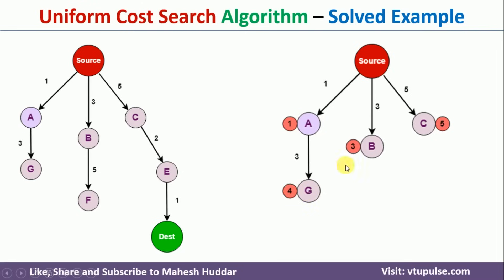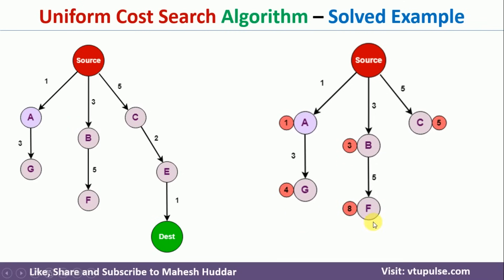Now we have G, B, and C in the priority queue. Out of these three, B has the minimum cost. From B there is only one path, which is B to F. We explore that path. The cumulative cost of F is 3 plus 5, which equals 8.